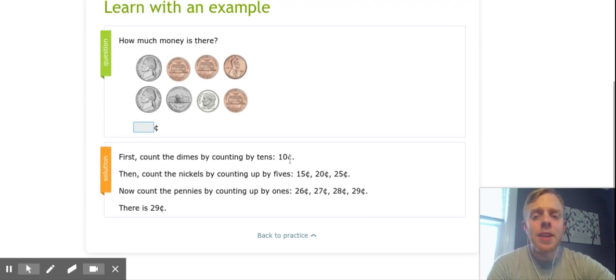First, count the dimes by counting by tens. There's only one of them. Then count the nickels by counting by fives: 5, 10, 15. Plus 10 gets me to 25. And then I'm just going to count my pennies: 26, 27, 28, 29. There's 29 cents.